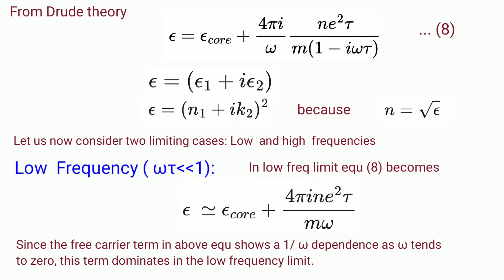Let us now consider two limiting cases. Let us first discuss low frequency, that is when ωτ << 1. In this case the ωτ term can be neglected. So we have ε ≃ ε_core + 4πine²τ/(mω). Since the free carrier term shows a 1/ω dependence as ω tends to 0, this term dominates in the low frequency limit.